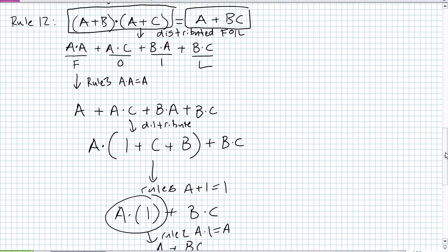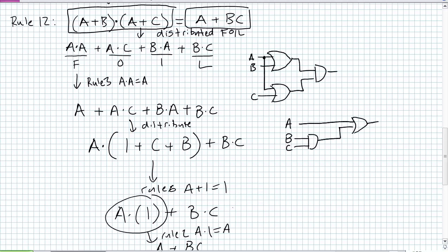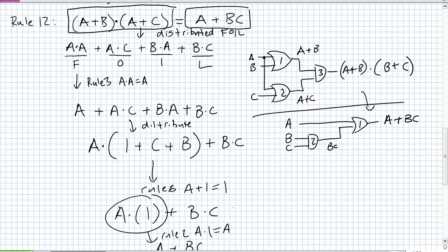Looking at the circuit implementation: A OR B ANDed with A OR C requires three gates, while the simplified A OR (B AND C) requires only two gates. You've potentially reduced power consumption to a third of the original, with substantially less wiring. The pattern to recognize is: common term, different term, different term — result is common term OR (different AND different).